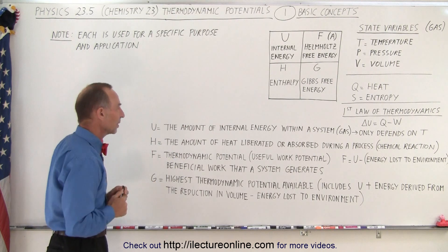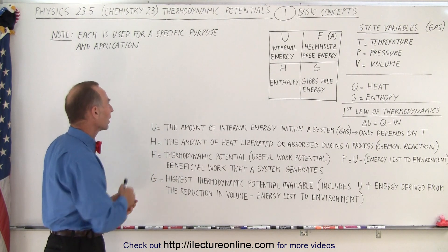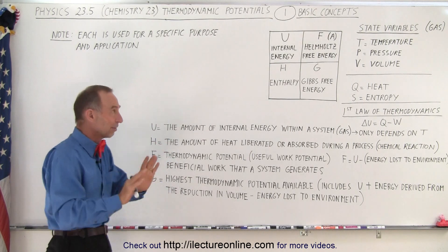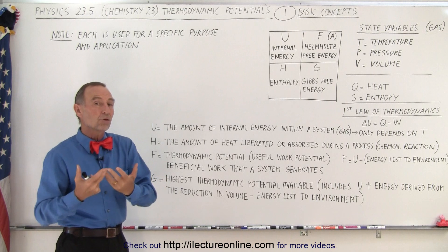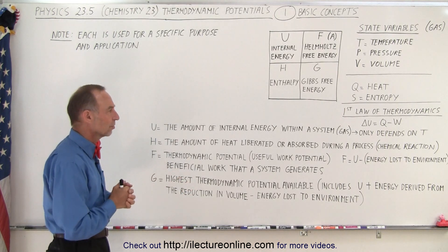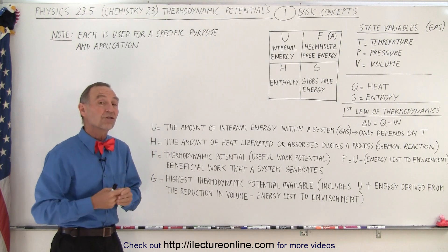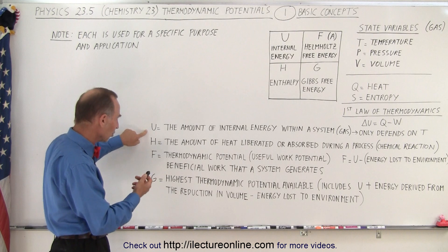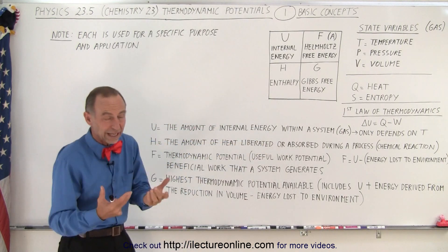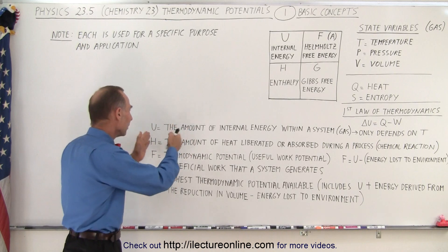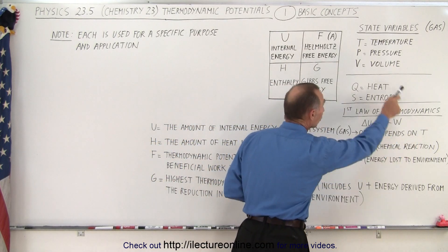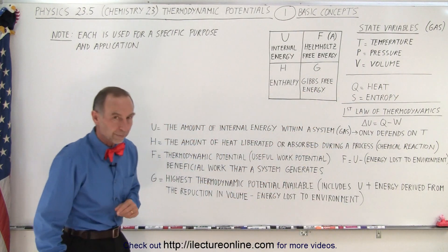Let's do a general concept overview of the four thermodynamic potentials. U, the internal energy, is typically related to a gas. It represents the amount of internal energy within the system — a combination of kinetic and potential energy. It depends on only a single state variable: the temperature of the gas or system.